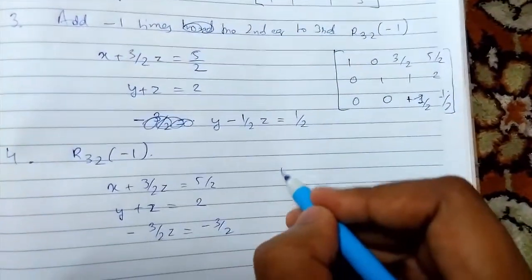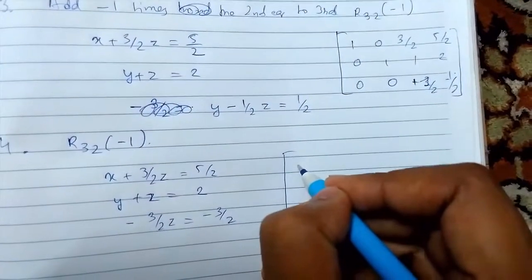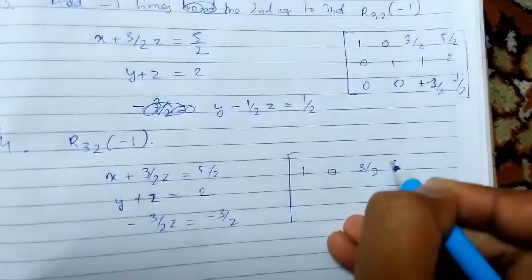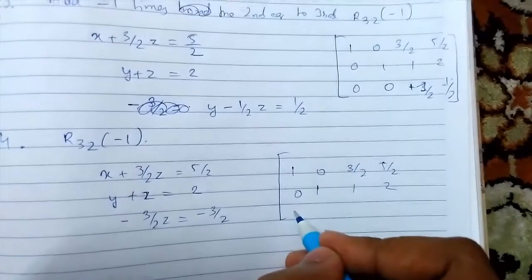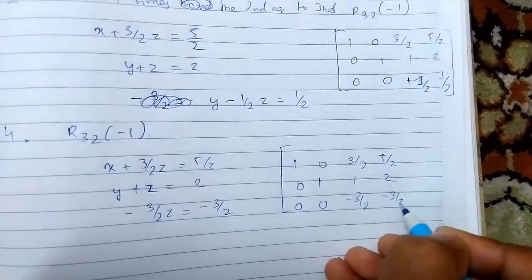And finally again we will draw the augmented matrix. So 1 0 3/2 5/2, 0 1 1 2, 0 0 minus 3/2 and minus 3/2.